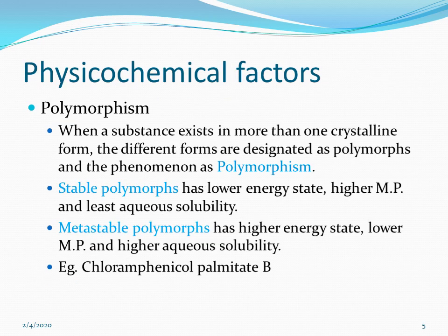Let us move towards the physicochemical factor of polymorphism and amorphism. Polymorphism is when a substance exists in more than one crystalline form; the different forms are designated as polymorphs and the phenomenon is known as polymorphism. It is divided into enantiotropic and monotropic polymorphism, and it is possible to detect the polymorphs by using X-ray crystallography.